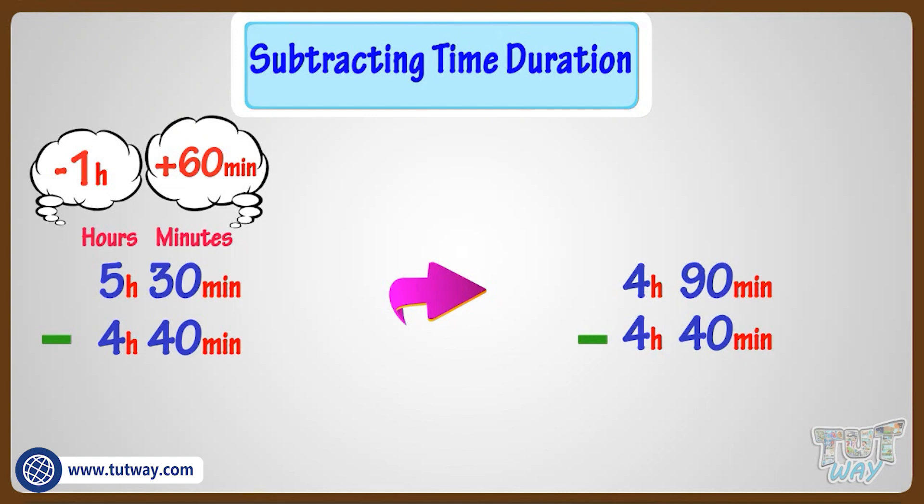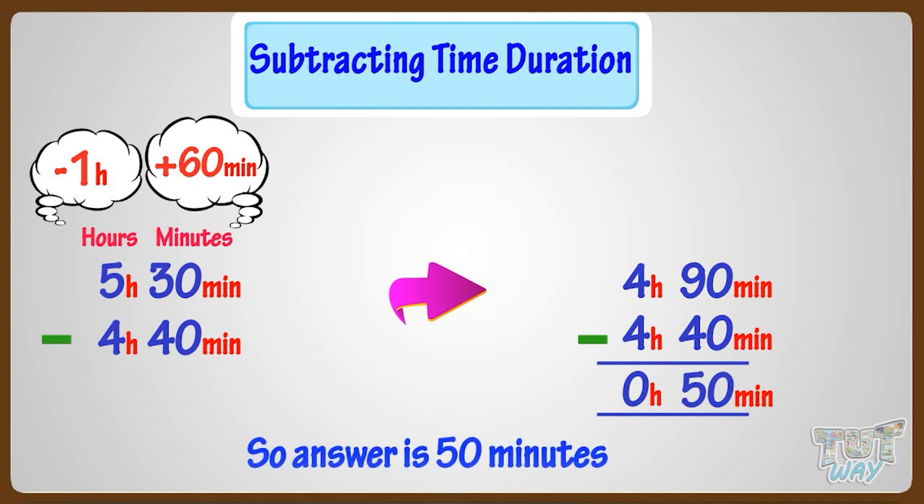Now subtracting hours, we get 4 minus 4 equals 0 hours. Now subtracting minutes, 90 minus 40 equals 50 minutes. Our answer is 50 minutes.